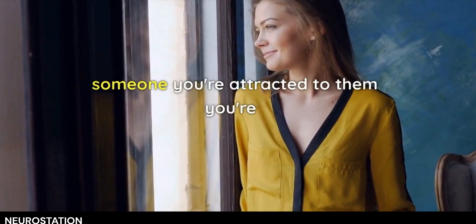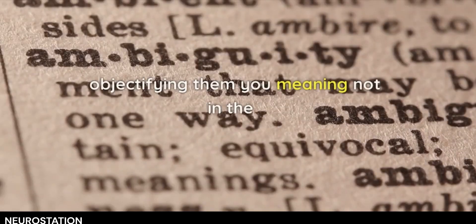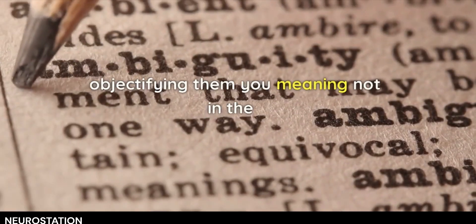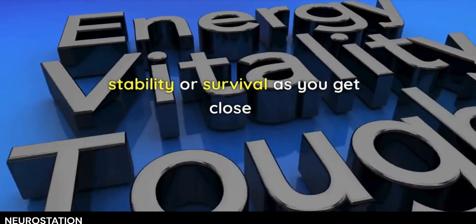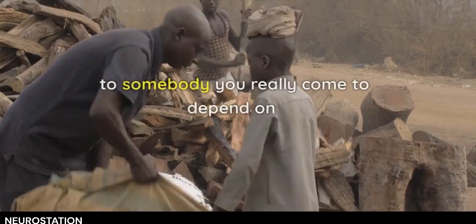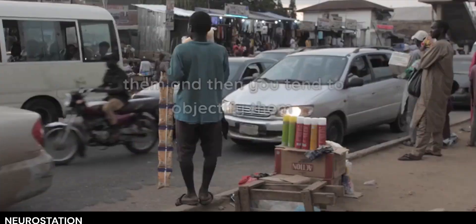When you first meet someone you're attracted to, you're essentially objectifying them. You're not dependent on them for emotional stability or survival. As you get close to somebody, you really come to depend on them, and then you tend to objectify them less.